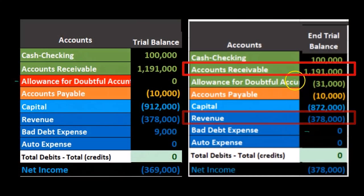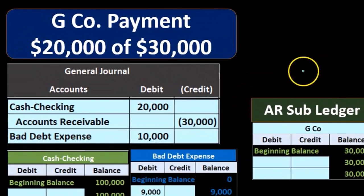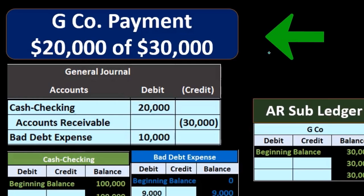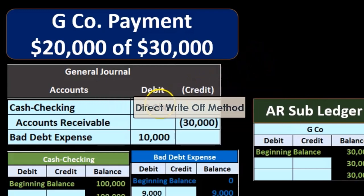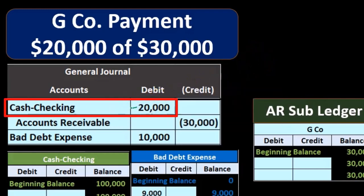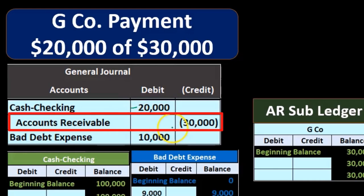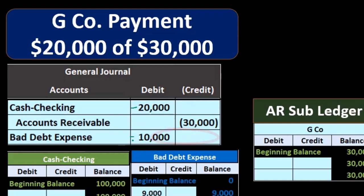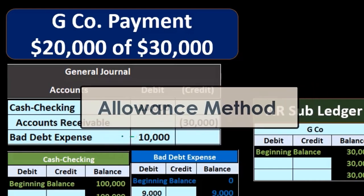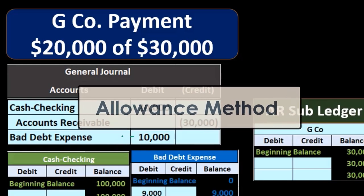Next transaction: G Company payment of $20,000 of $30,000 owed. Looking at the direct write-off side: we did get cash, so we debit cash — it's increasing. The accounts receivable is going off the books for the full $30,000, the entire amount owed. We're not going to get the additional $10,000, so the $10,000 difference has to go somewhere. Under the direct write-off method, we'll write it off to bad debt expense. Under the allowance method, as we'll see in the next slide, it would go to the allowance for doubtful accounts.